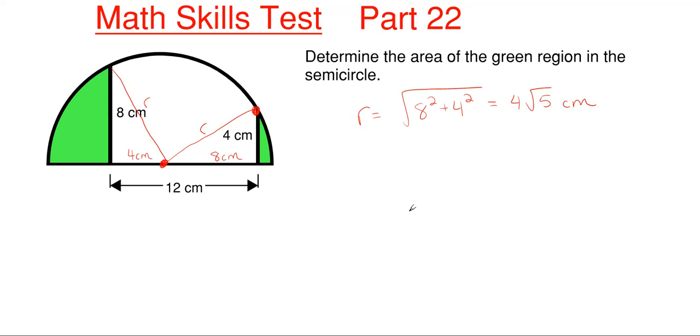So we can go ahead and we can find out the area of the overall semicircle pretty quickly here. So the area of our semicircle would just be pi r squared over 2 which is just pi times 4 square roots of 5 centimeters over 2 squared and that gives us 40 pi centimeters squared as our overall area for our semicircle.